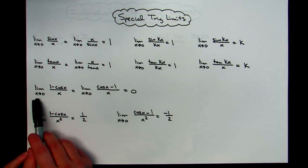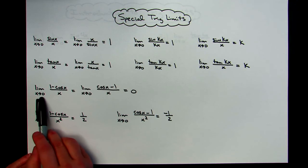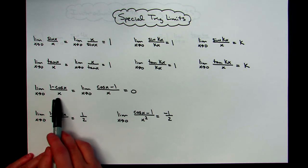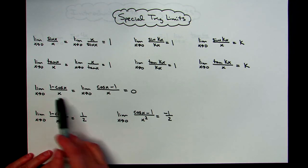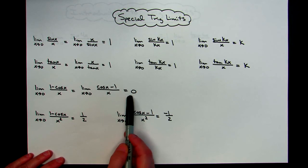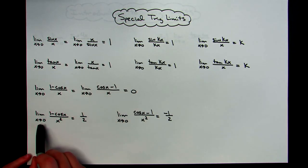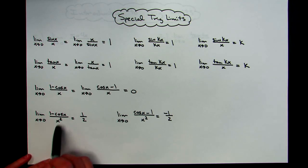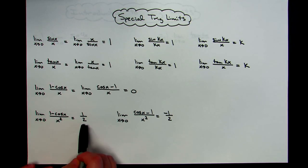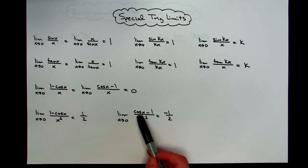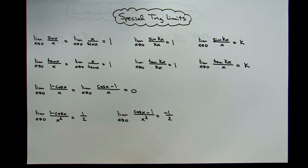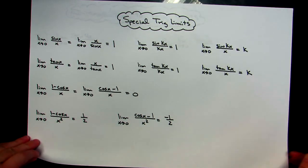The next most common one you will see in a calculus book is the limit as x approaches 0 of 1 minus cosine x over x, which equals 0. If you reverse that numerator, you still get 0. Then with one little change on the denominator: the limit as x approaches 0 of 1 minus cosine x over x squared is going to be one half. And when you reverse the numerator, it's negative one half. Memorizing these special trig limits will help whenever you go to work these things out.